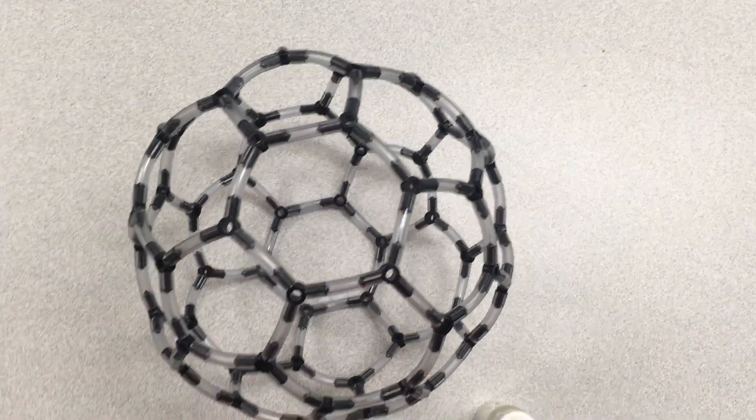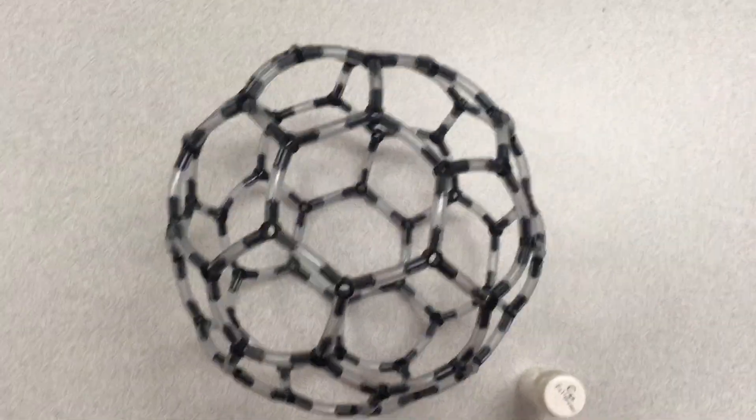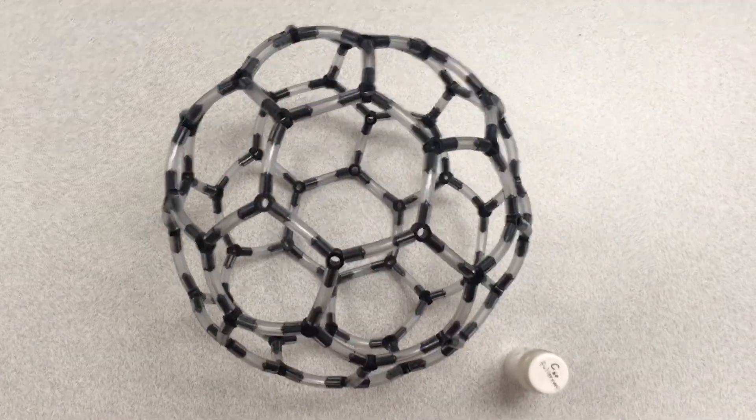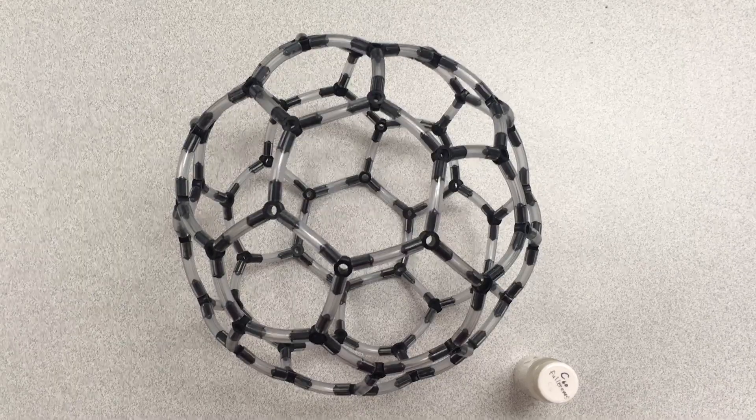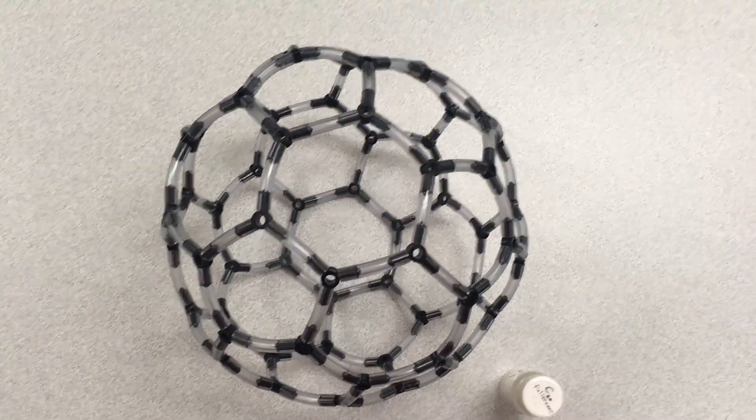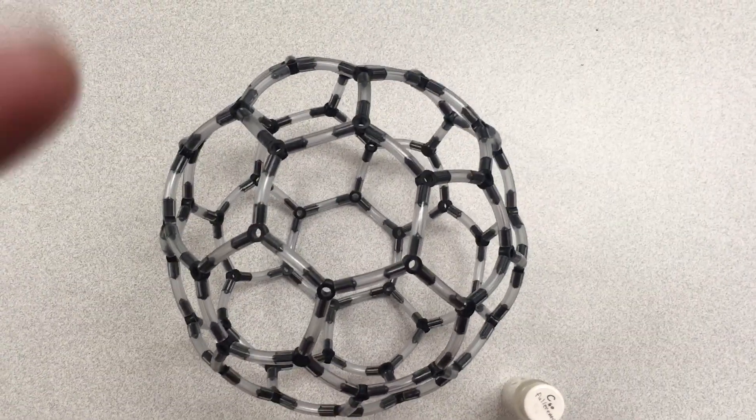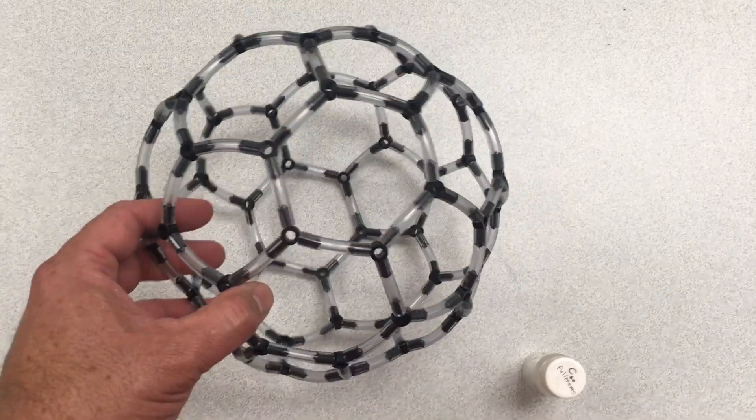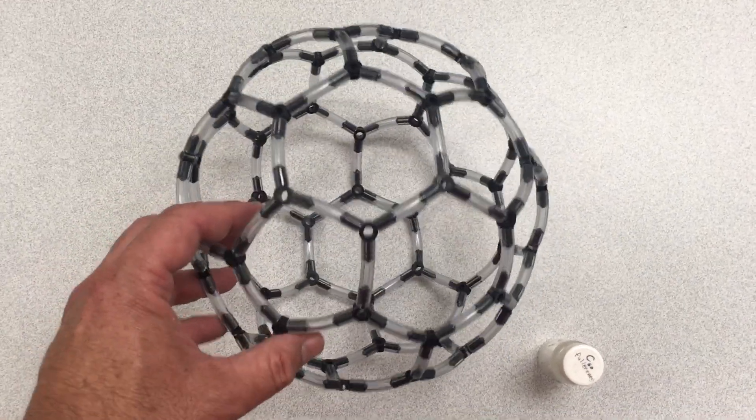There are other fullerene structures. There's C70 and there are other structures that have even more carbon atoms. But C60 is probably the most famous because of its wonderful spherical symmetry.